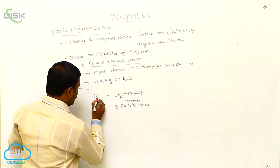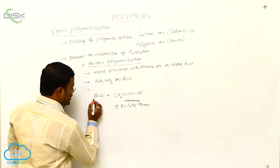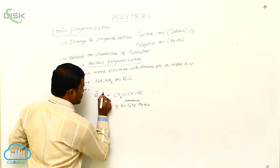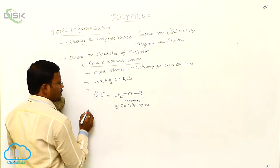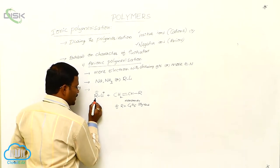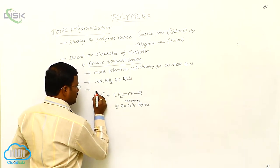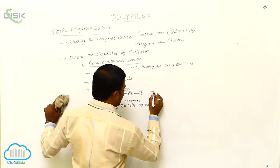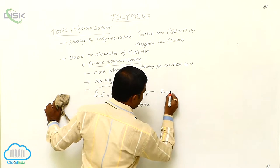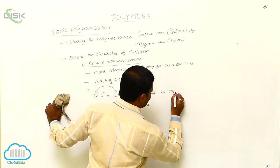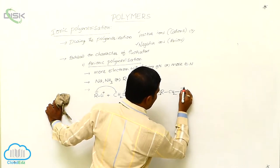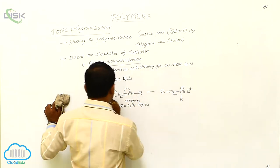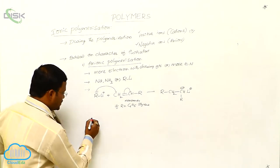When this monomer reacts with alkylithium — in alkylithium, the alkyl group always carries a negative charge and lithium carries a positive charge. That means the alkyl group is the more electronegative species. So these electrons shift here and these electrons migrate here to produce RCH2CH- R, neutralized by lithium ions of alkylithium.